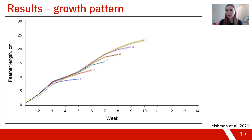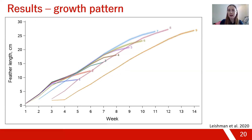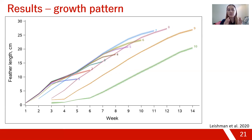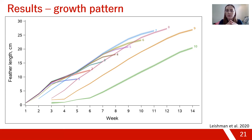This same tapering pattern can also be seen in primaries 7 through 10. Although those lines start and stop at different periods on the graph, they still show a similar pattern: fast initial growth that tapers off towards the end of feather growth.